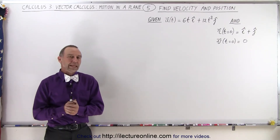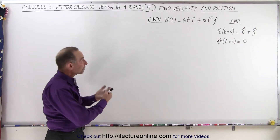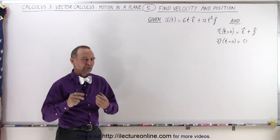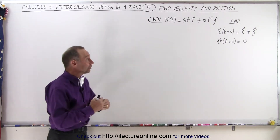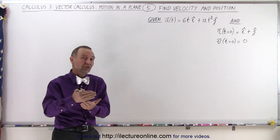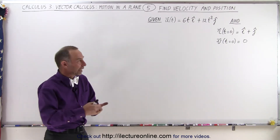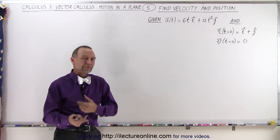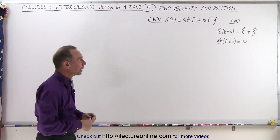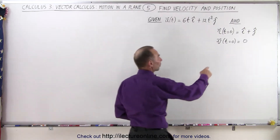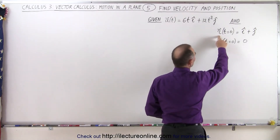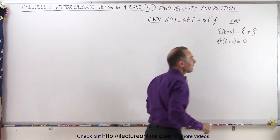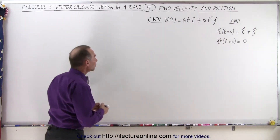Welcome to our lecture online. In this video we're given the acceleration vector and asked to find the velocity and the position vector — kind of the other way around. Instead of taking the derivative from position to velocity to acceleration, here we're going to integrate to work backwards. They're also giving us initial conditions: the position when t equals 0 is i plus j, and the velocity when t equals 0 equals 0.